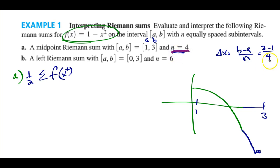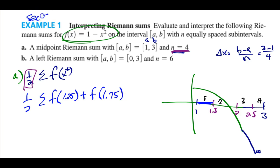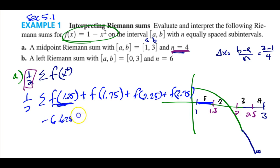If I'm doing the midpoint with four sections and a width of one half, I move from 1 to 1.5, then 1.5 to 2, then 2 to 2.5, giving me four partitions. For midpoint, I want the center of each interval, so it's f of 1.25, f of 1.75, and so on — similar to section 5.1. Go to the function, plug those midpoints in, and actually evaluate to get the numbers.